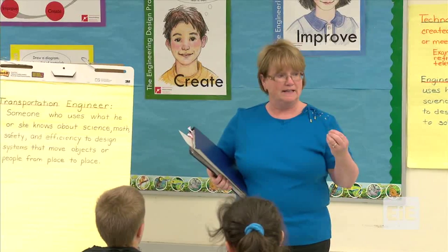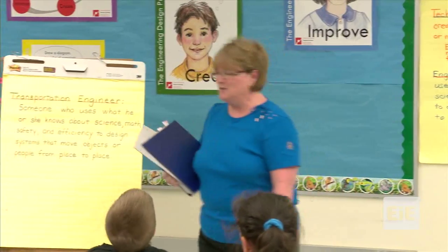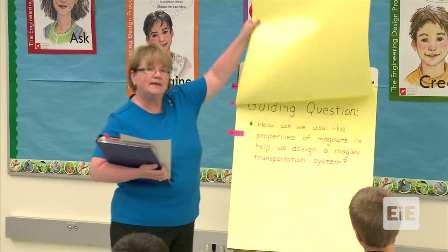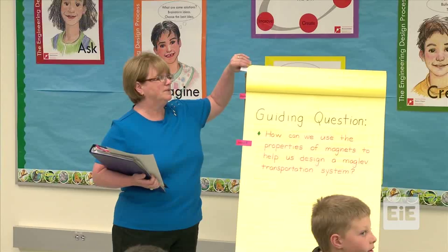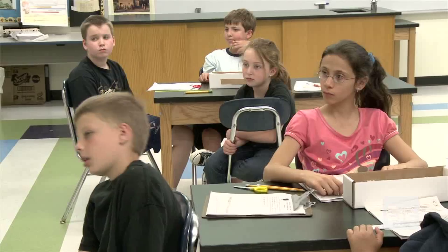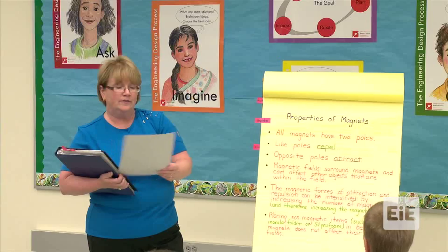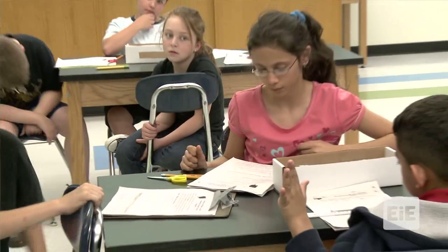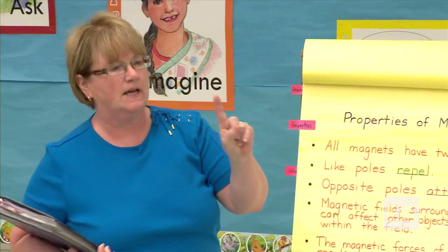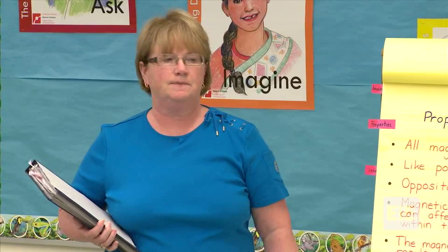Before we started this, we had a lesson about magnets called Magnetic Personality, where you all worked at stations. Who can remind us why we did that lesson? To know the properties of magnets. We brainstormed and tested different properties, and on the first part of your paper — the Ask paper — you needed two properties from that list. Who can give me one property important for the maglev transportation system?